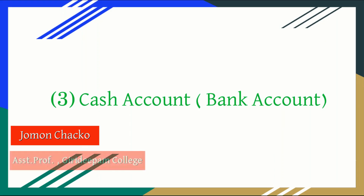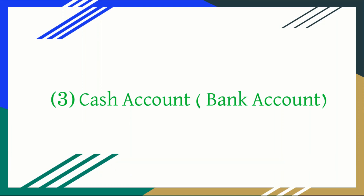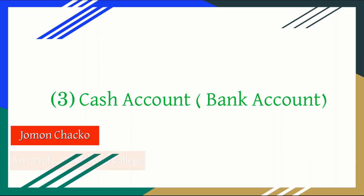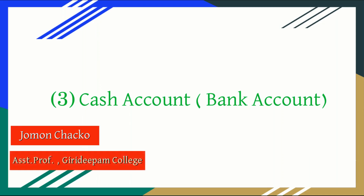Third, it is the cash account. Cash account is debited with the opening amount of cash from the balance sheet. The receipts of cash from the realization of assets are also debited. The payments of cash, that is payments of expenses and liabilities, are credited. The balance in the cash account would be equal to the amount payable to the partners as shown by the partners capital account. When the partners are paid, the account gets closed.